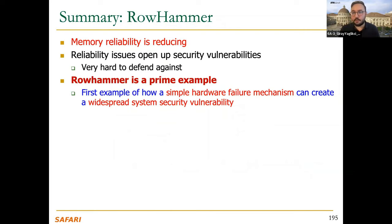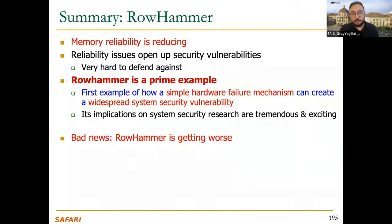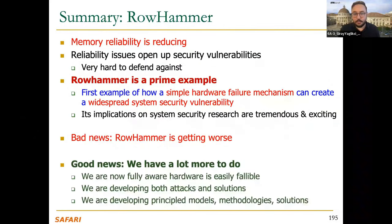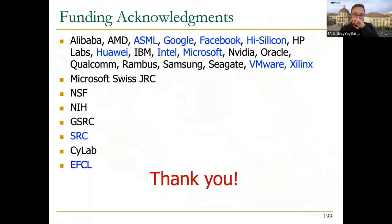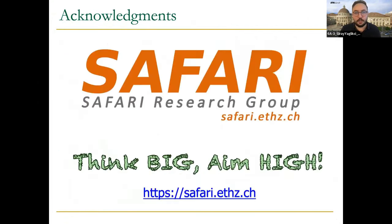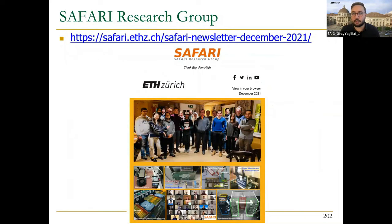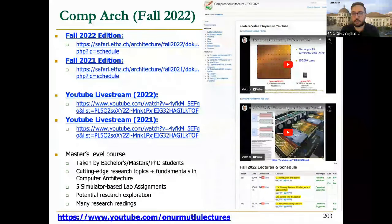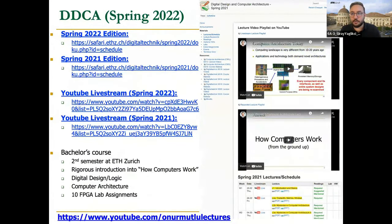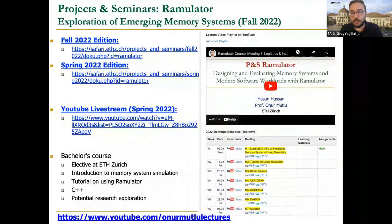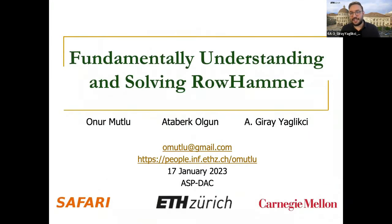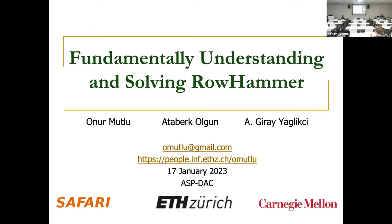In conclusion, memory reliability is reducing, reliability issues open up security vulnerabilities, and it's very hard to defend against this. Rowhammer is the prime example of how a simple hardware failure mechanism can create a widespread system security vulnerability. The bad news is that rowhammer is getting worse; the good news is that there is a lot more to do and we are already working on it. I'd like to thank all our supporting companies and institutes, and our SAFARI research group offers open-sourced lectures on computer architecture at both master and undergraduate levels.